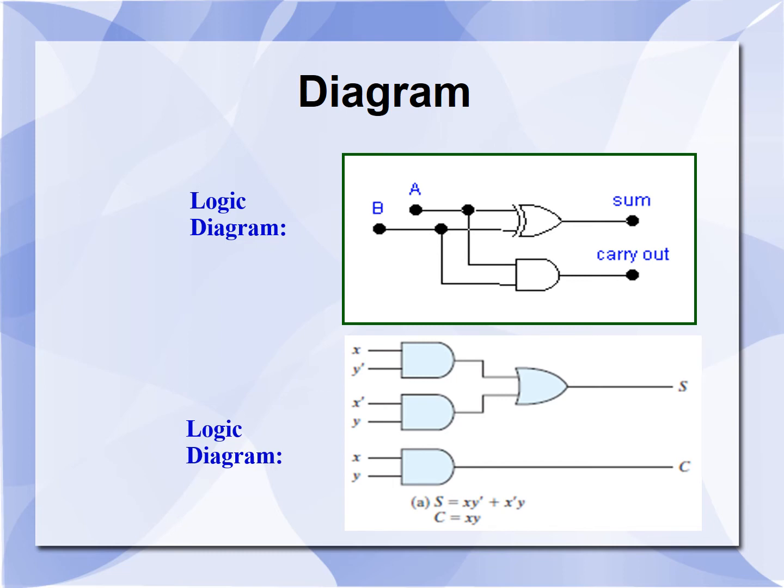The XOR gate is shown here. A and B are the two inputs, and the same inputs are also fed to the AND gate. At the output of the XOR gate, we have the sum. At the output of the AND gate, we have the carry. A XOR B can be written as AB complement plus A complement B.